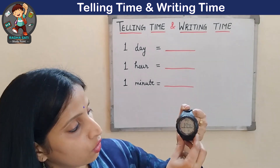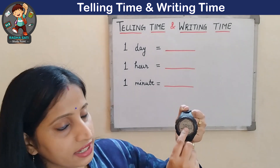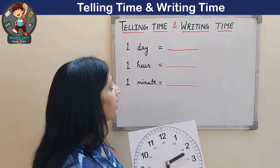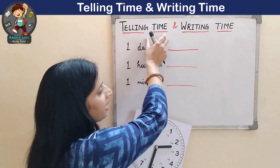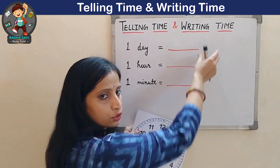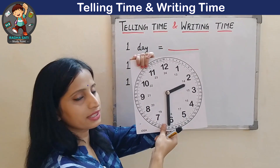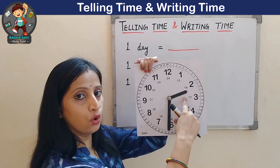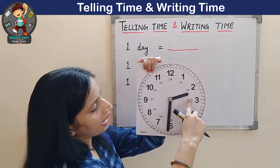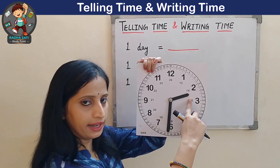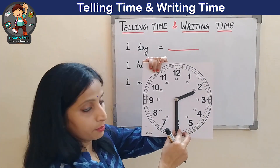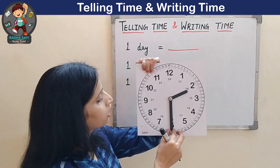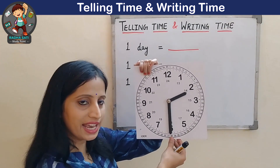In a digital watch, the hour and the minute are always separated by a colon in between. As we are learning to tell and write time today, we will use this analog clock. This clock has 2 hands: the smaller hand is called the hour hand, and the longer hand is called the minute hand. This clock does not have a second hand.